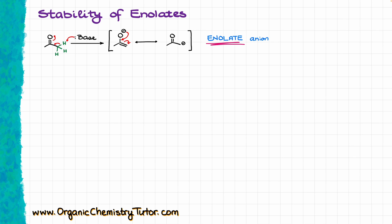This resonance-stabilized species has two different contributors. The contributor with the minus on the oxygen is going to be our major contributor, and the contributor with the minus on the carbon is going to be the minor contributor. Because of this resonance stabilization, the pKa of the protons in the alpha position is going to be comparatively low — around 19. Compare that to a simple alkane like propane, where the pKa of a similar position is somewhere around 60. That number is astronomical, so the resonance stabilization that the carbonyl provides is quite a big deal.